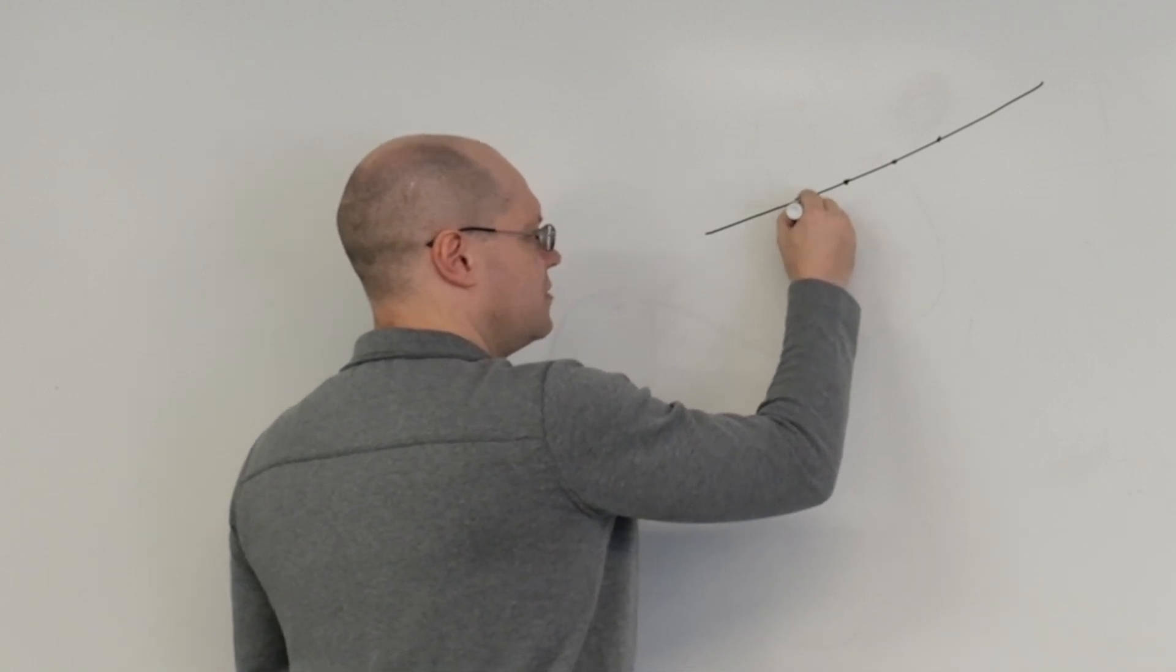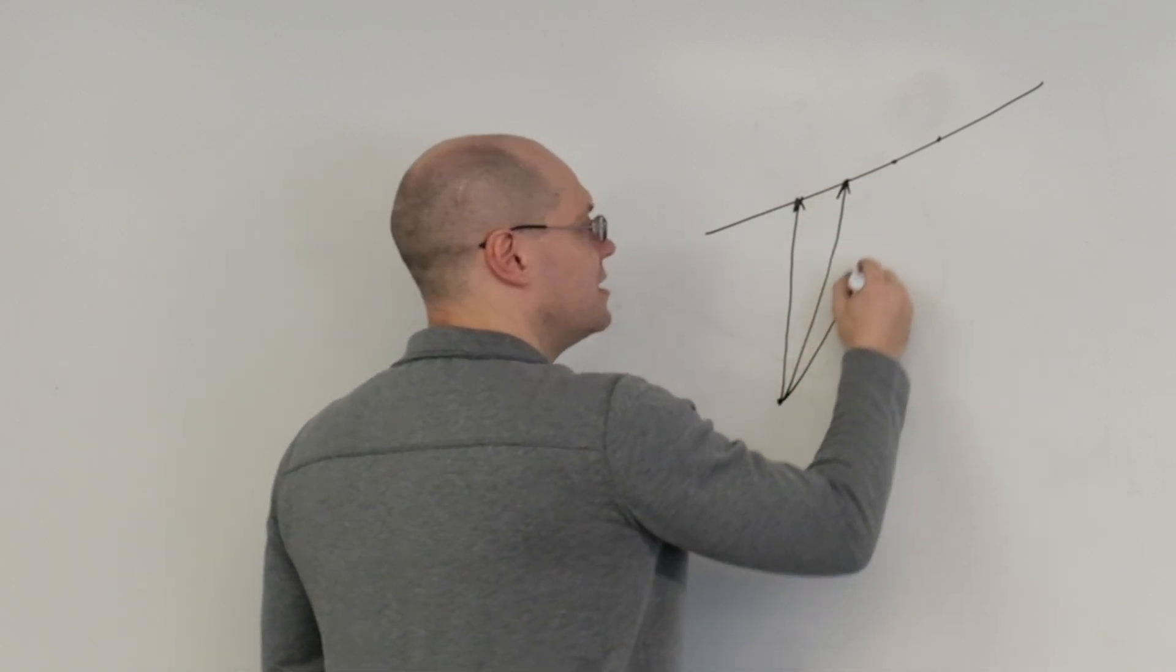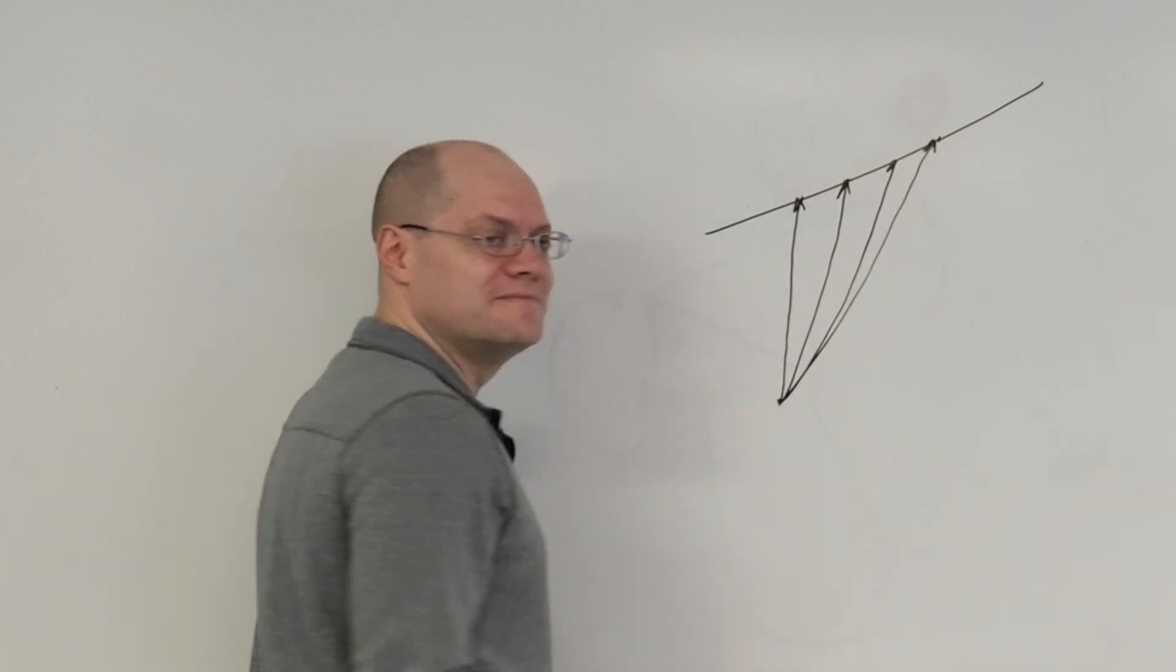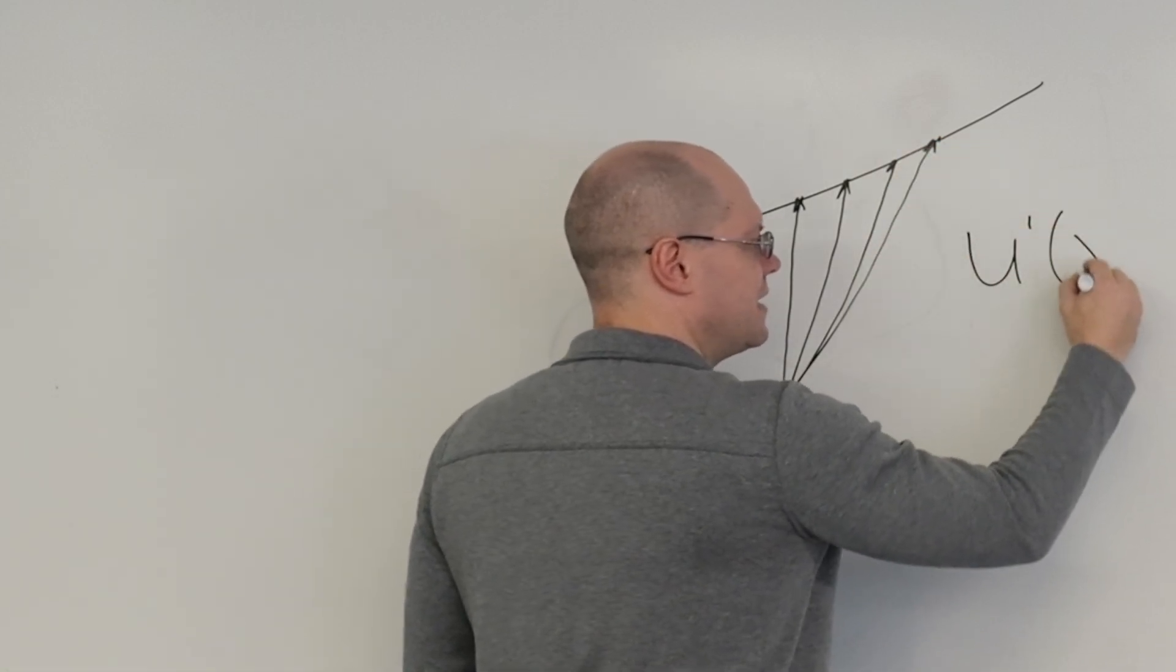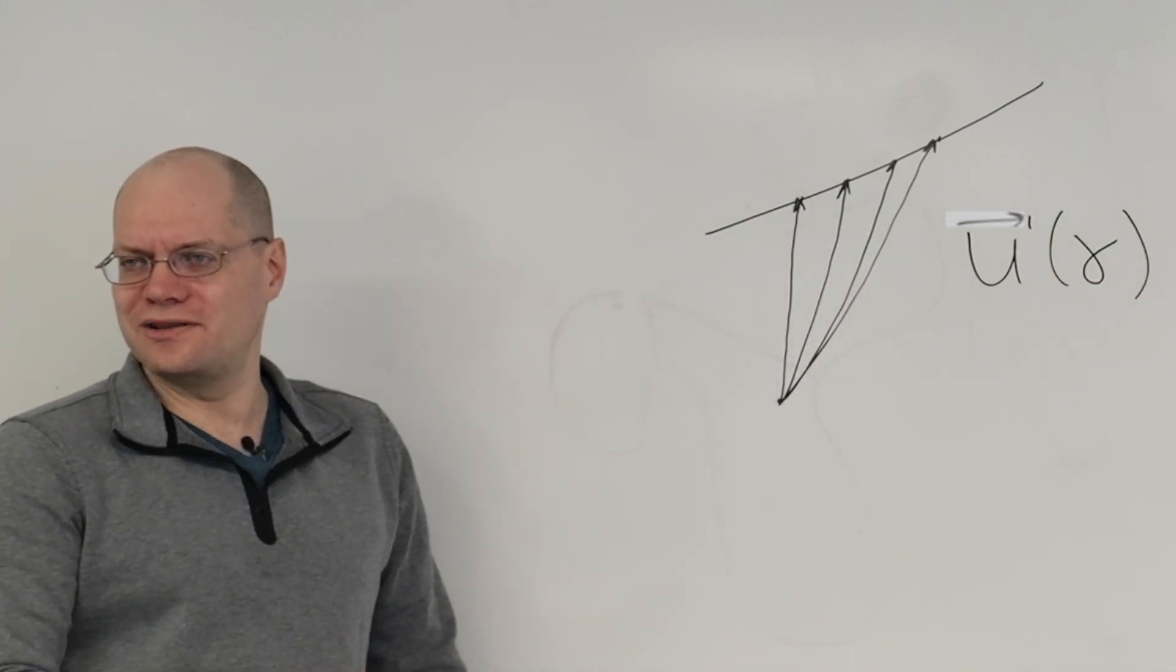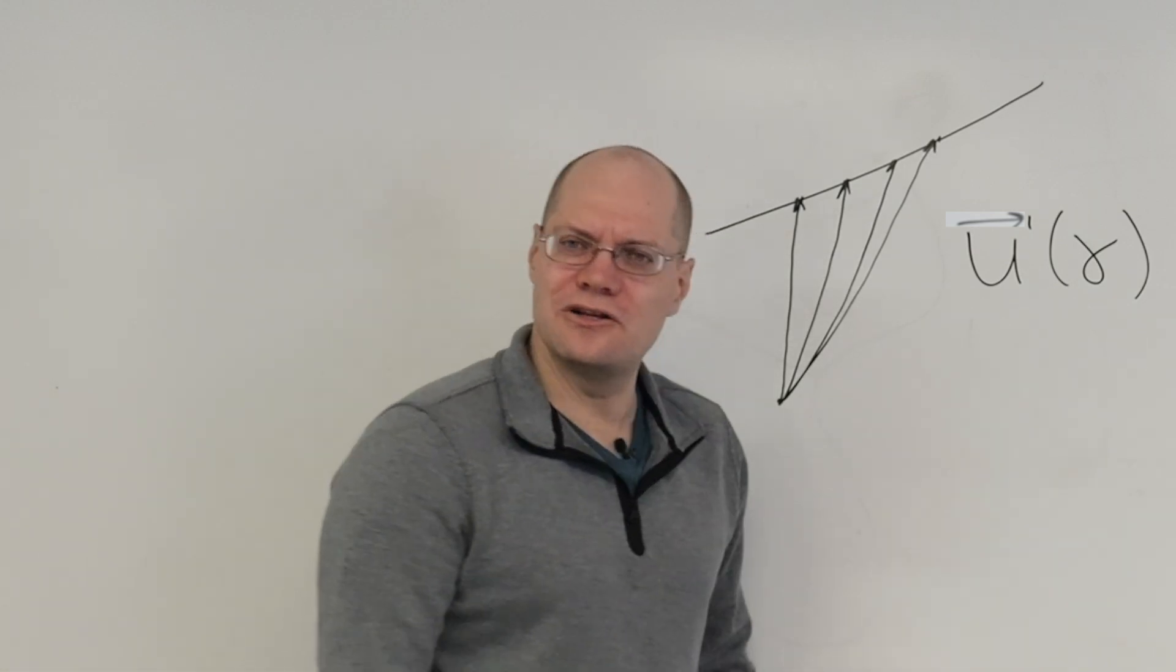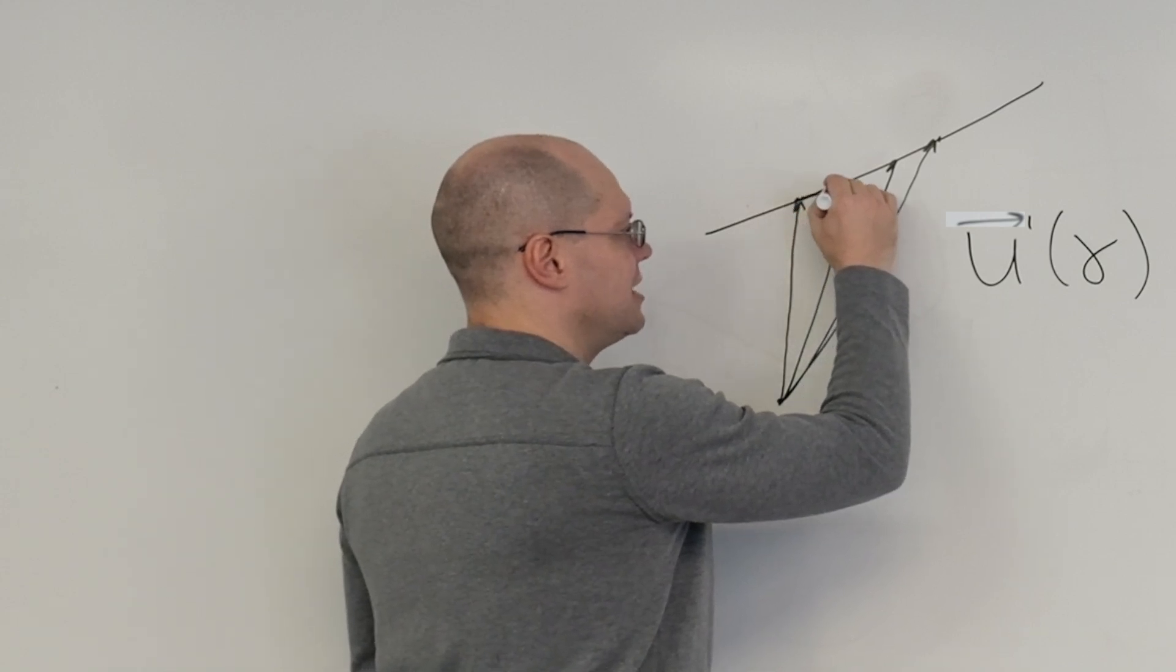And so here is U of one, or maybe U of zero, U of one, U of two, U of three. And what do you think U prime of gamma looks like? Well, I'm not going to dwell on this. Because we basically discovered what it'll look like last time. It'll be a vector tangential to this line.